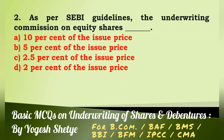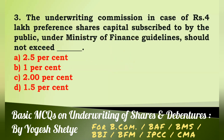Question 2: As per SEBI guidelines, the underwriting commission on equity shares — (a) ten percent of the issue price, (b) five percent of the issue price, (c) two point five percent of the issue price, (d) two percent of the issue price. Answer: As per SEBI guidelines, the underwriting commission on equity shares is two point five percent of the issue price. Answer C.